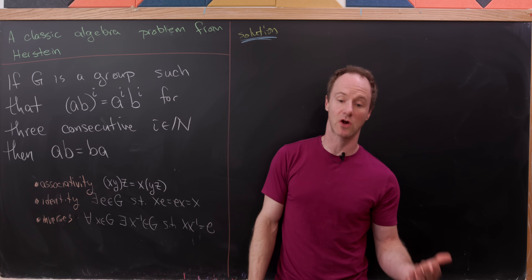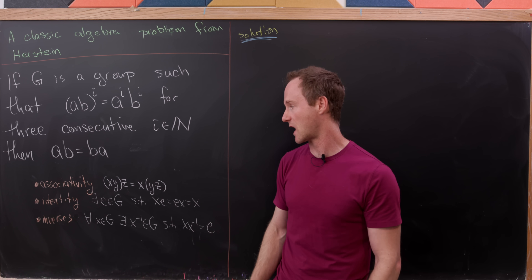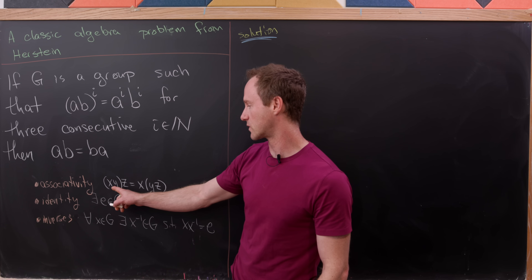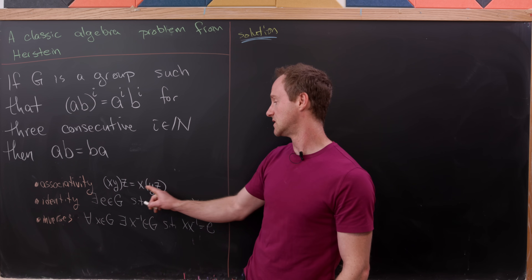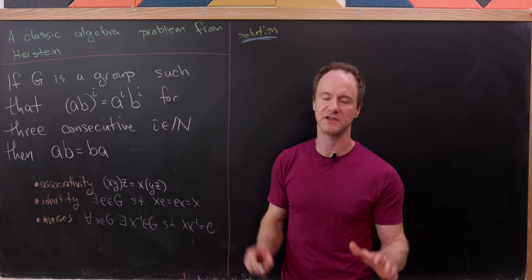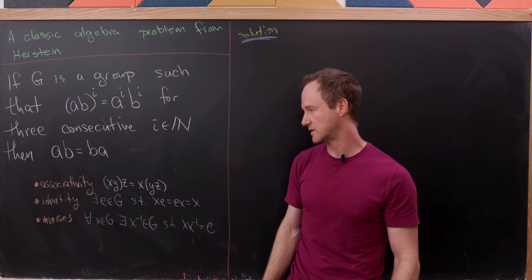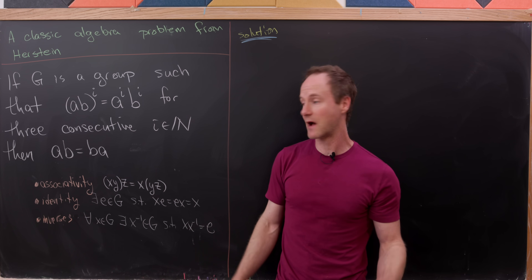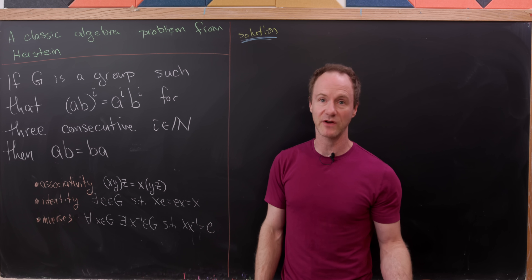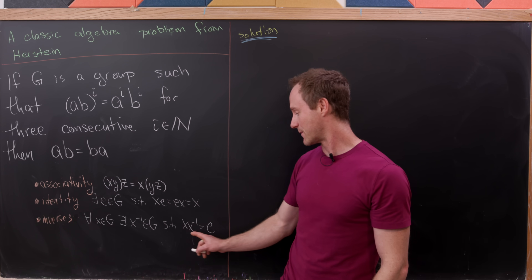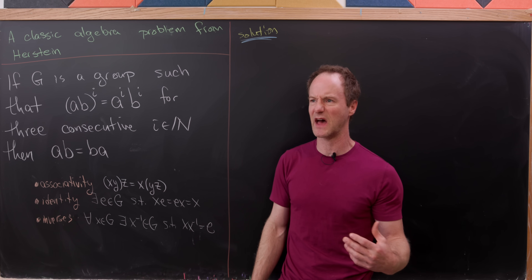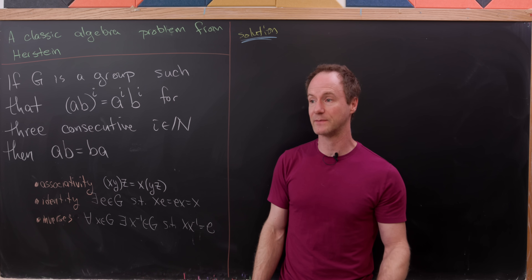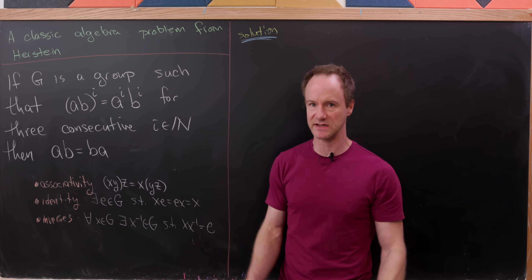I'd like to recall that a group is a set together with an operation satisfying three axioms. The first is associativity: X times (Y times Z) equals (X times Y) times Z. Then there's an identity element E, such that combining it with anything gives you what you started with. And for every element there is an inverse — like a path back to the identity — analogous to a reciprocal in rational numbers, or a negative of a positive integer in the integers.